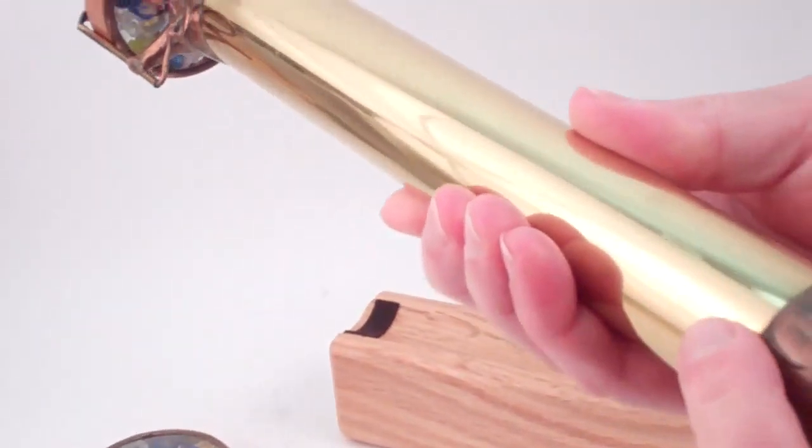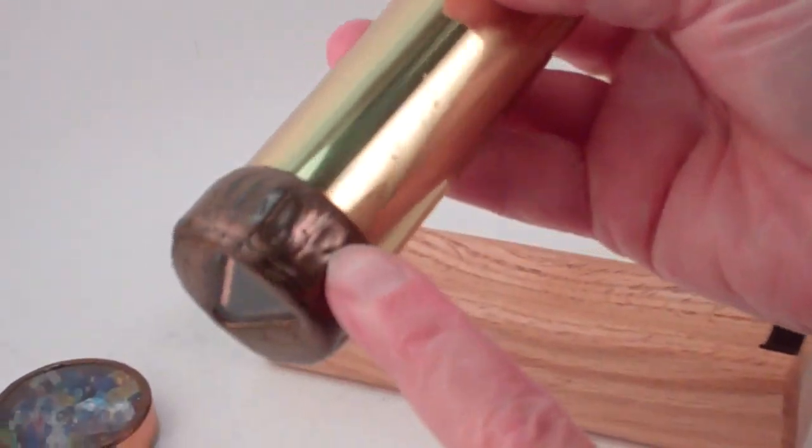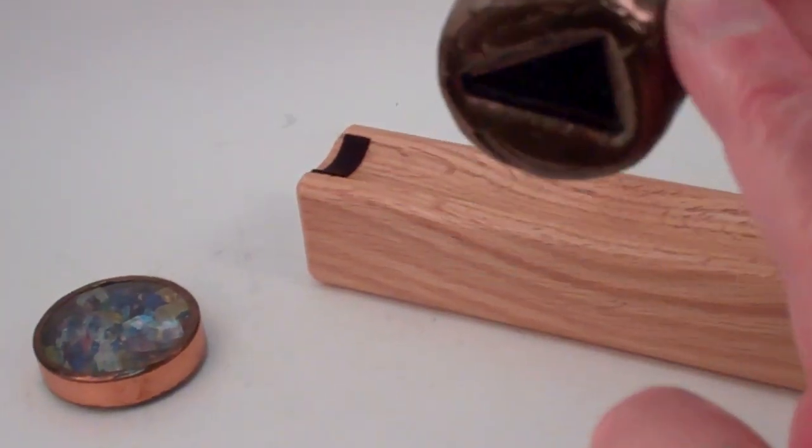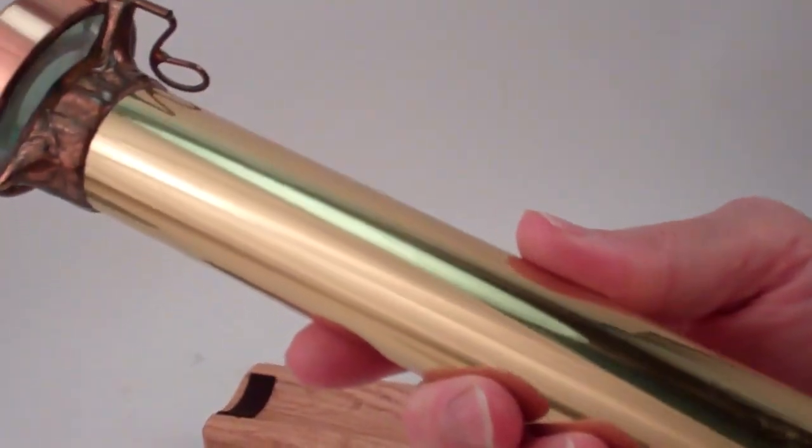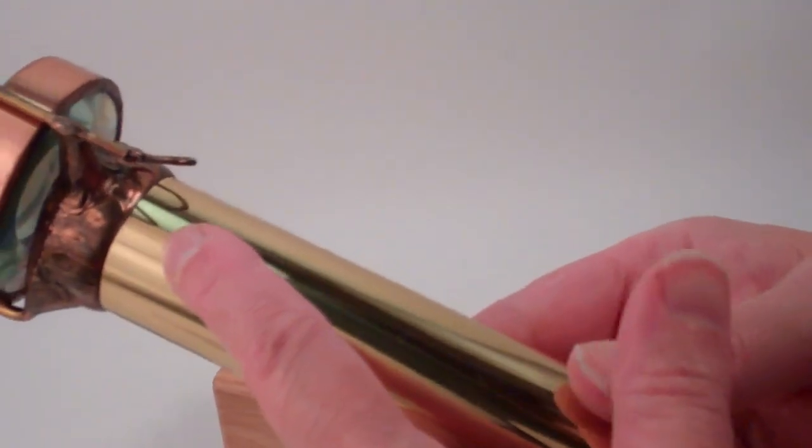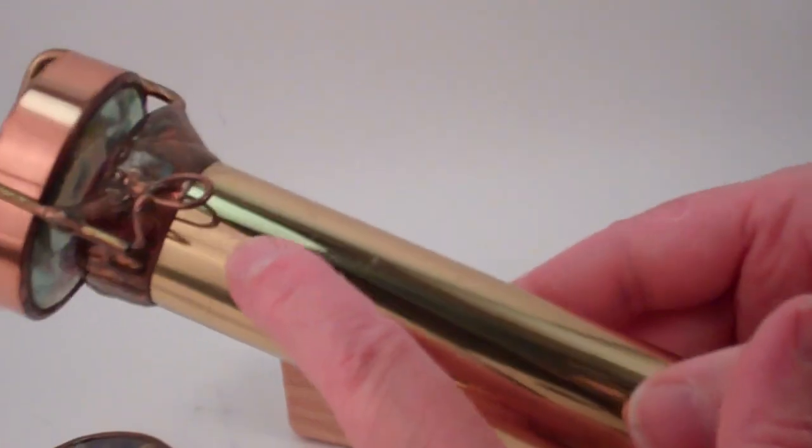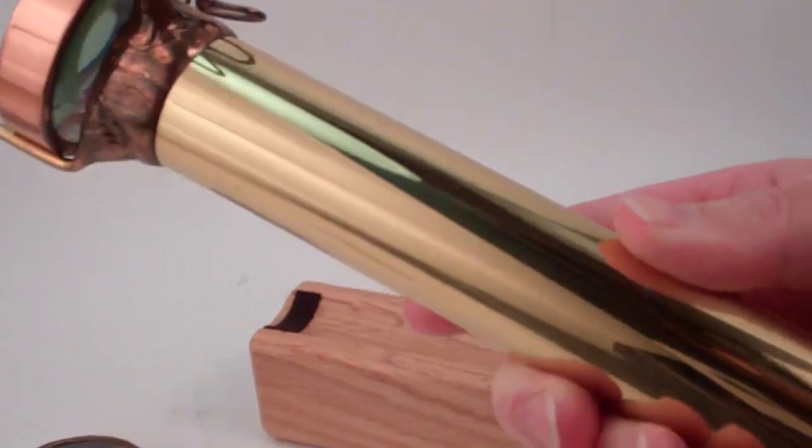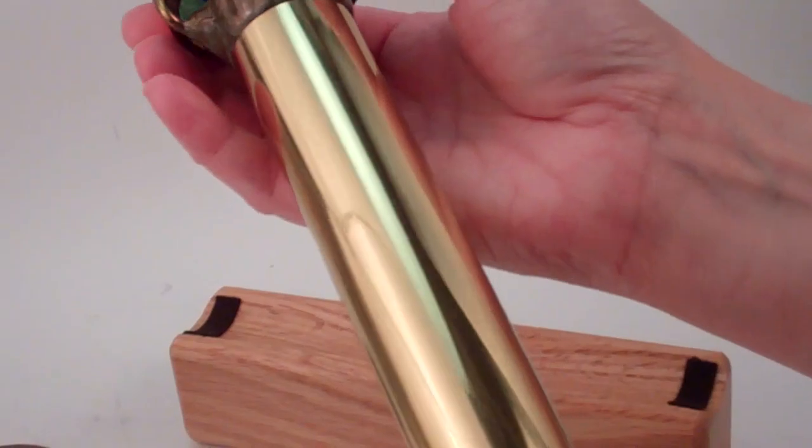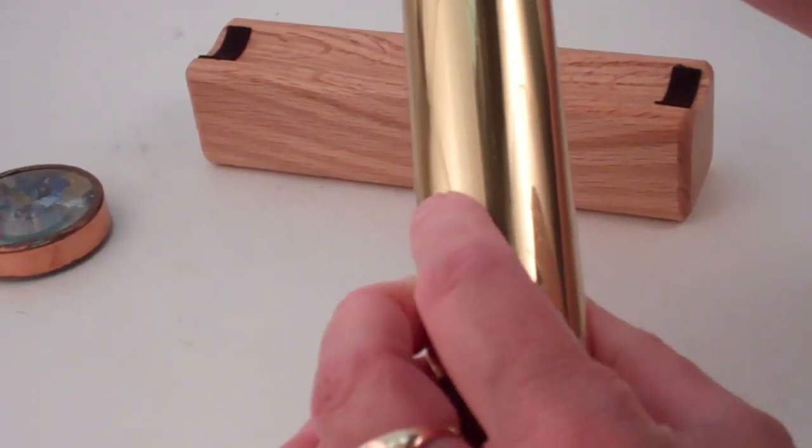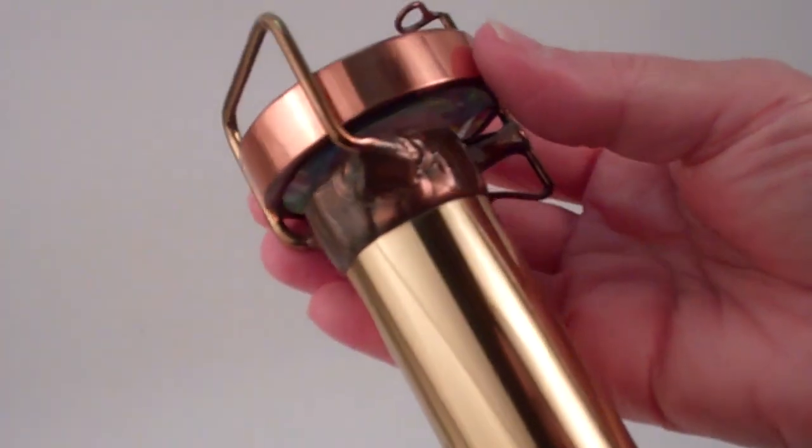Now the exterior of this kaleidoscope has their distinctive solder work style with this dark patina, and this one features a solid brass tube. Being vintage, there are a few nicks in the brass finish, but it's in really quite good condition for the age and the love and use it's had through the years.